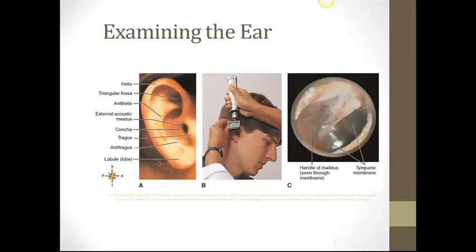Examination of the ear: in A, we have the outside of the ear. We have the helix, which is the top part, then the triangular fossa, which is the inner part of the top. We have the concha, the medius, the tragus, the antitragus, and the lobe of the ear.